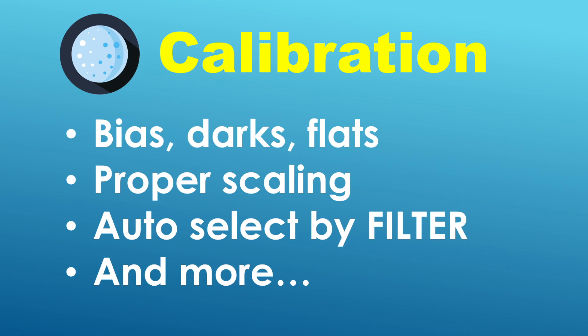So just a brief overview: I will be talking about the three different types of calibration frames. These include bias frames, dark frames, and flat frames. After that I will be talking about the proper scaling of dark frames and how that has been changed with this recent version. And after that I'll talk about a really exciting enhancement, which is the ability to automatically select flat frames by filter.